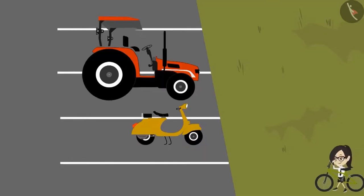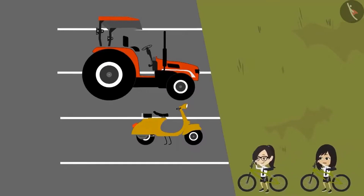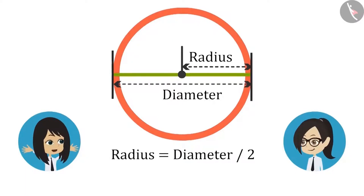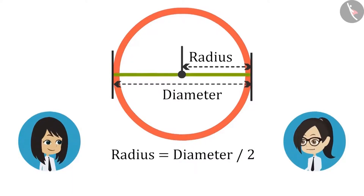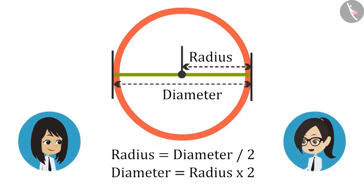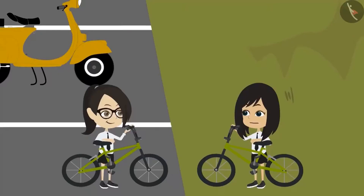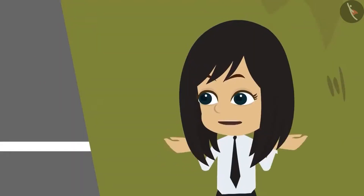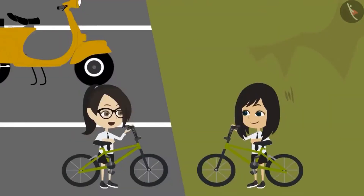It is not only small but it is half. Sir told that the radius is diameter divided by 2, which means diameter is equal to 2 times the radius. Let's measure these 4 tyres, then we will tell Sir. Which tyre should we measure first? Let's measure the tyre of our bicycle first.